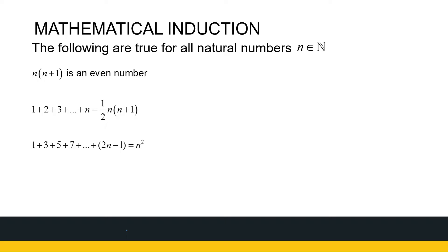If we look at these following three statements, they are all true for all natural numbers — 1, 2, 3, 4, 5, all the way. If we look at the first statement, n times n plus 1 is an even number. That's true for all natural numbers n.